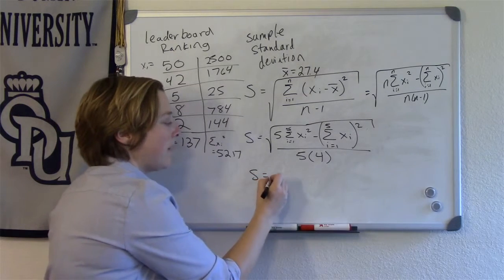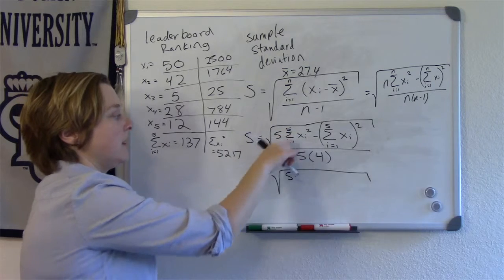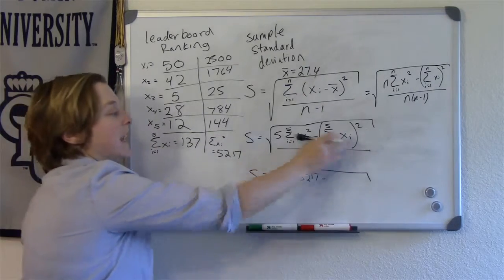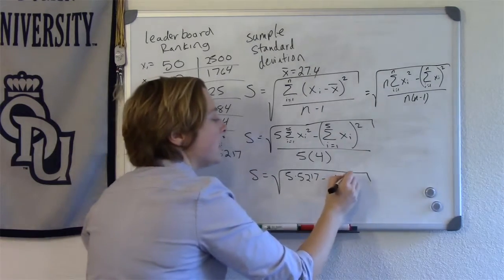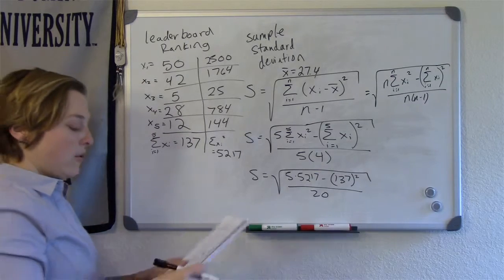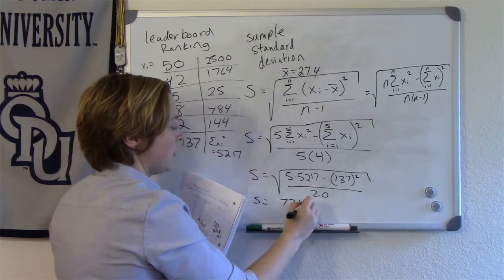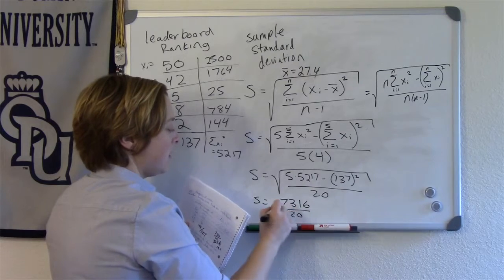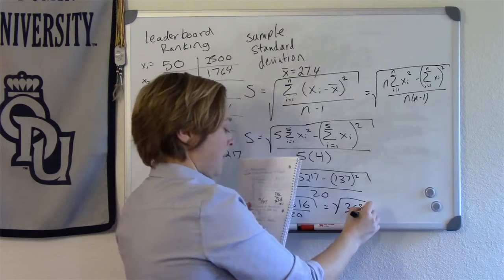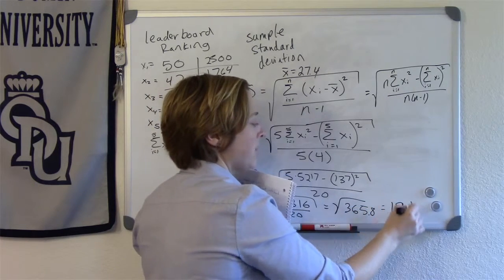So now I'm going to go back to my equation and I have 5 times the sum of the squares. So this is the sum of the squares. So 5 times 5,217 minus the sum of the data, 137, all of that is squared. 5 times 4 is 20. So that numerator, if you were to calculate that out, that should be 7,316 divided by 20. You want to take the square root of that. So that comes to the square root of 365.8, which comes to 19.1.